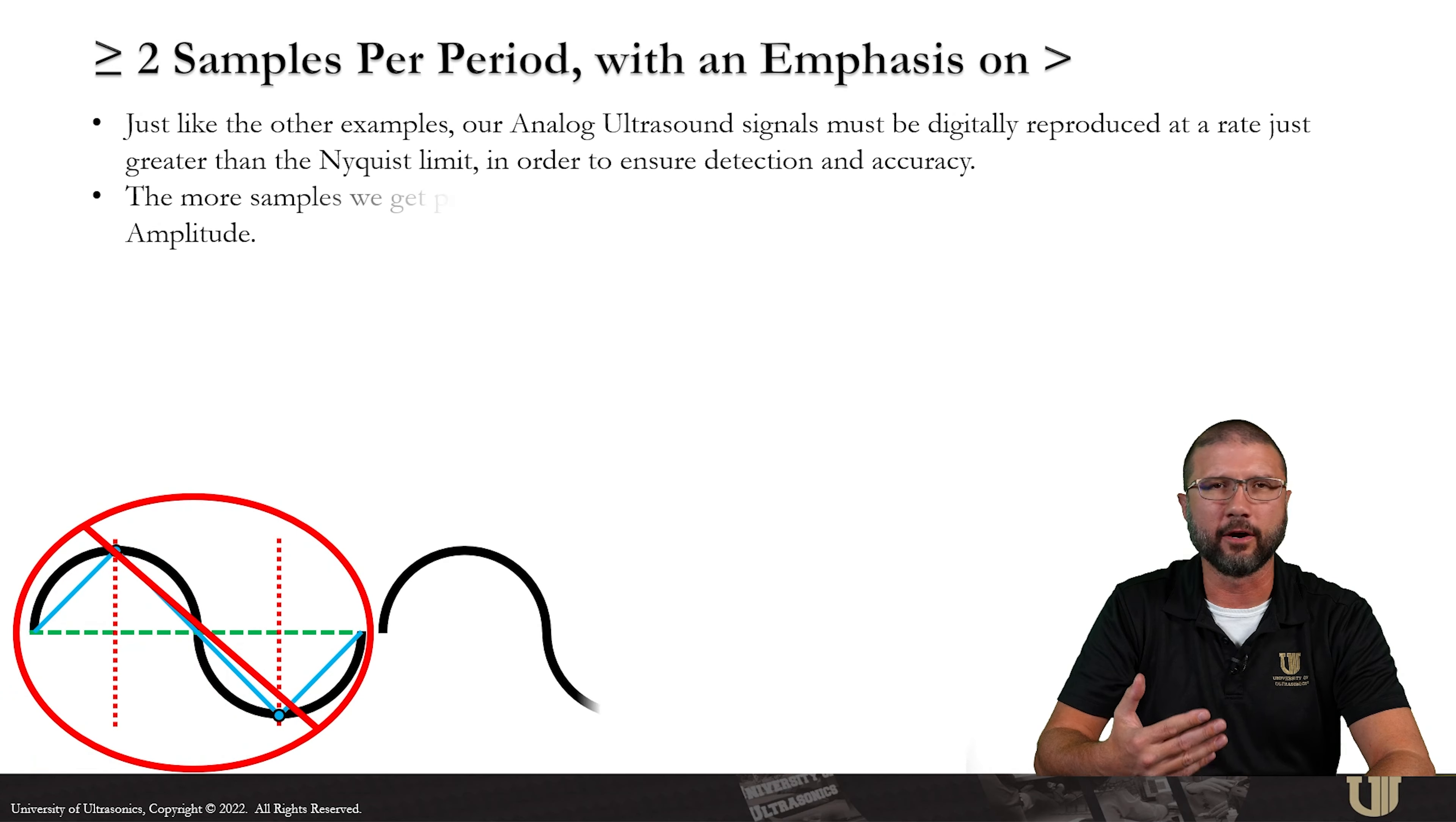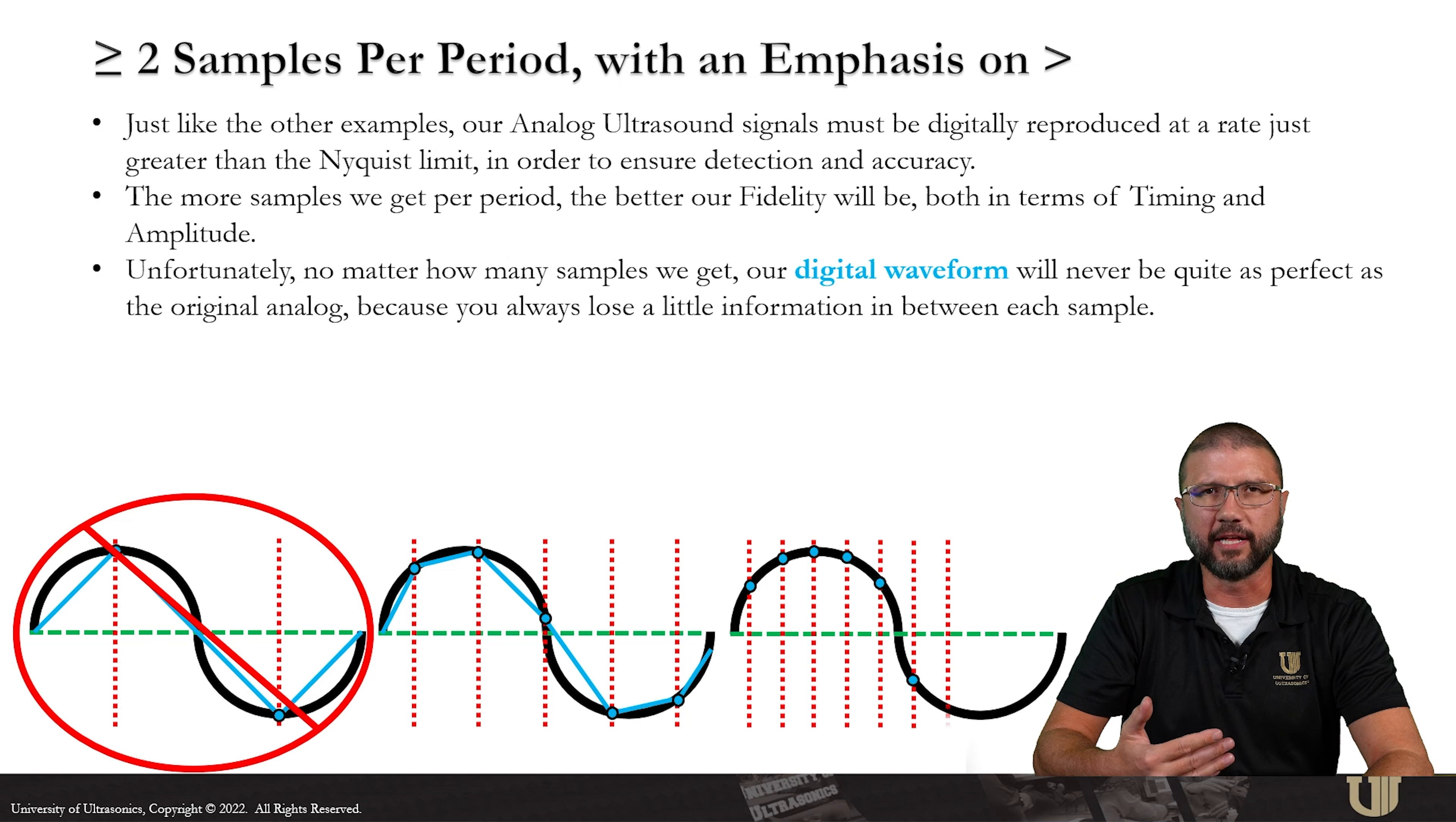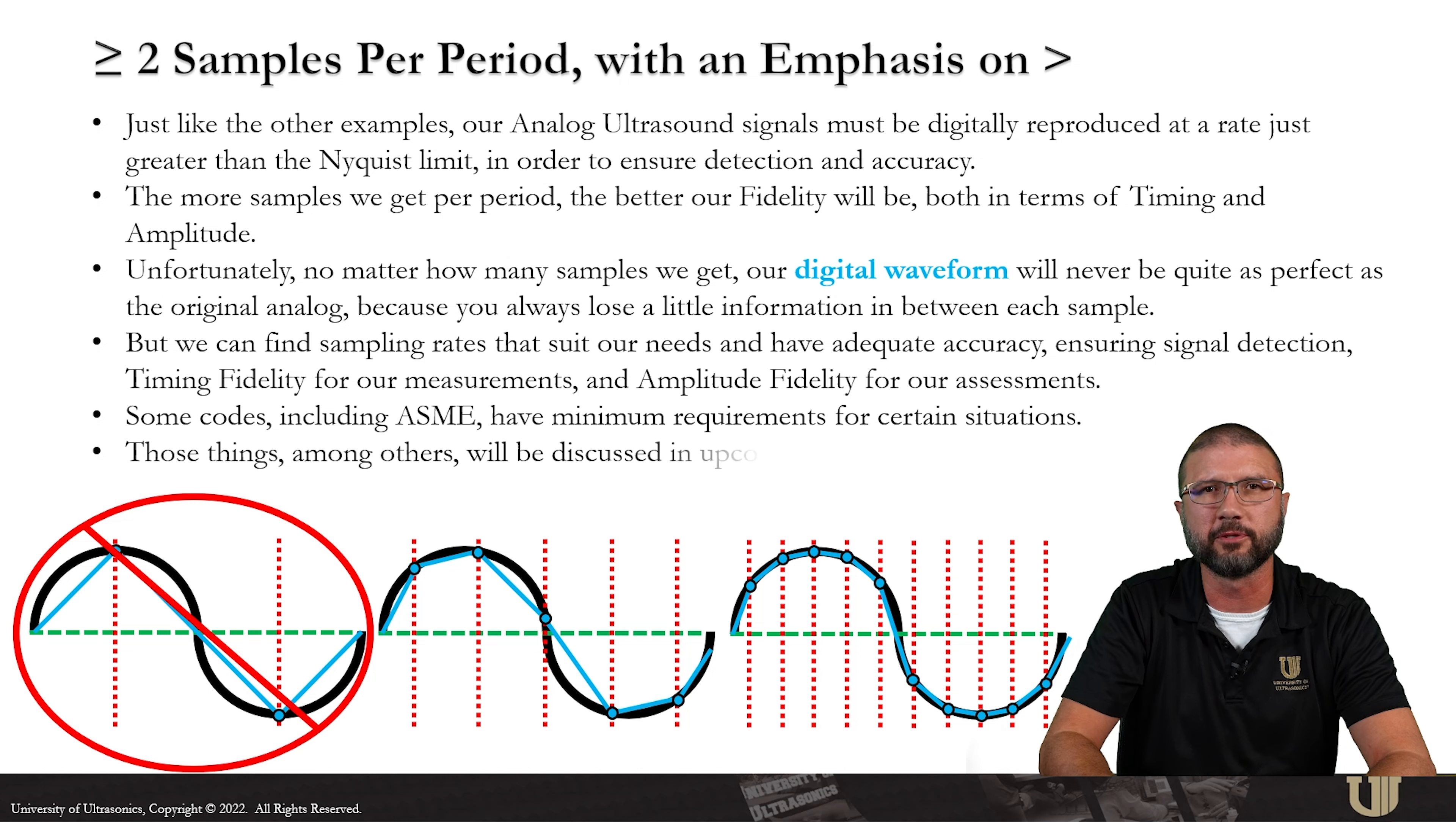Just like those other examples, our analog ultrasound signals must be digitally reproduced at a rate just greater than the Nyquist limit to make sure that we have detection and some bit of accuracy. The more samples we get per period, the better our fidelities will be both in terms of time and amplitude. But unfortunately, no matter how many samples we get, our digital waveform will never be quite as perfect as the original analog because you always lose a little bit of information in between your samples. But we can find sample rates that suit our needs and have adequate accuracy, ensuring signal detection, timing fidelity of our measurements, and amplitude fidelity for the amplitude assessments. Some codes, including ASME, are going to have minimum requirements for certain situations and those things and others we're going to talk about in future installments.